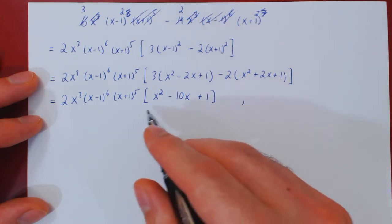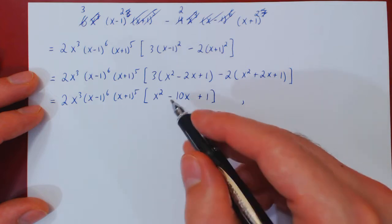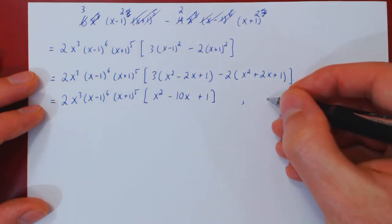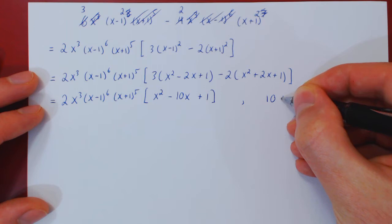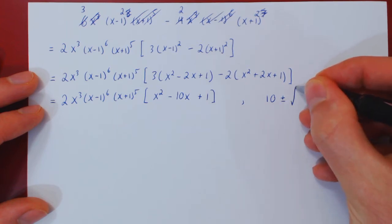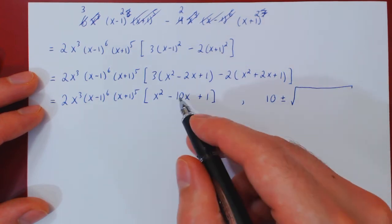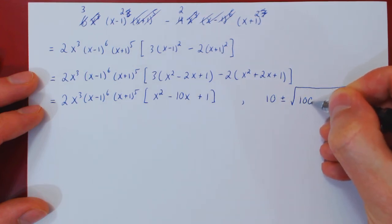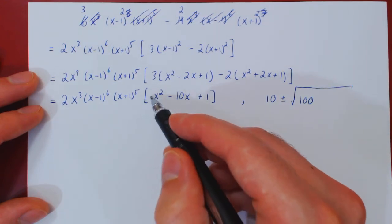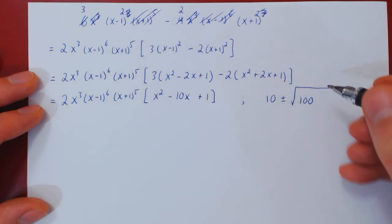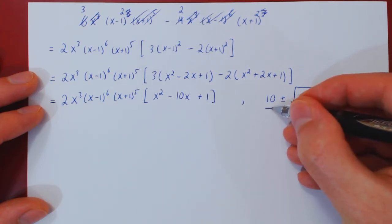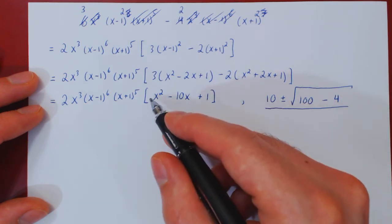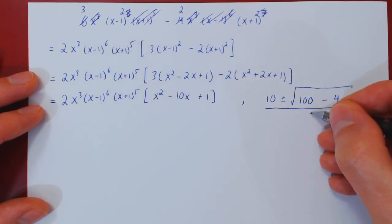So the zeros of the quadratic, if you recall, are negative b. So negative negative 10 is plus 10, plus or minus the square root of b squared. Well, negative 10 squared is 100, minus 4ac. a is 1, c is 1, so it's minus 4. Over 2a. a is 1, so over 2 times 1, over 2.